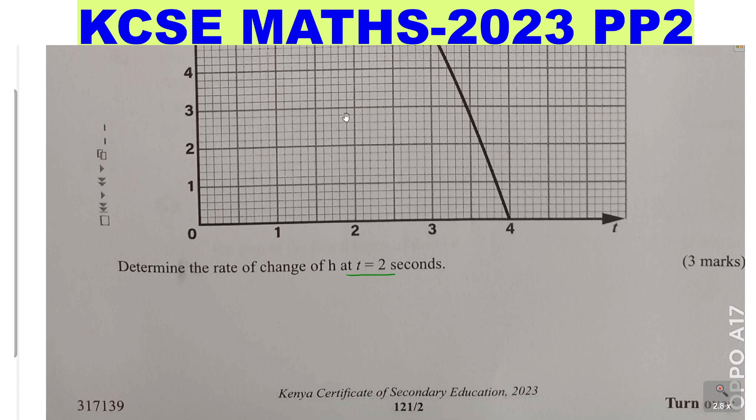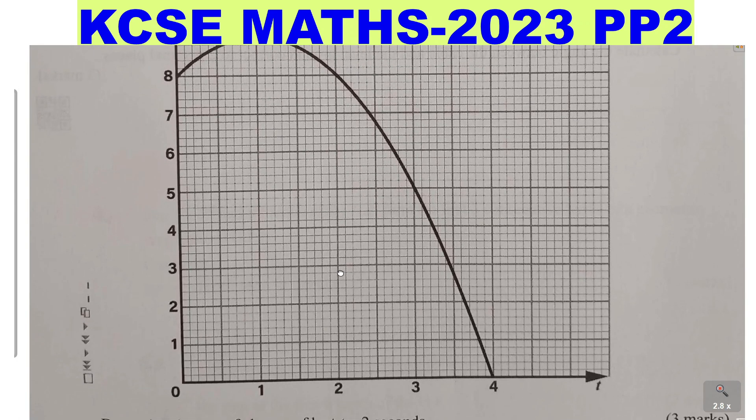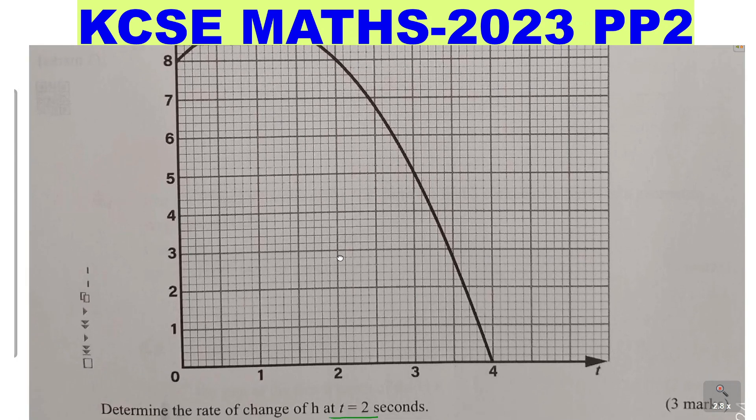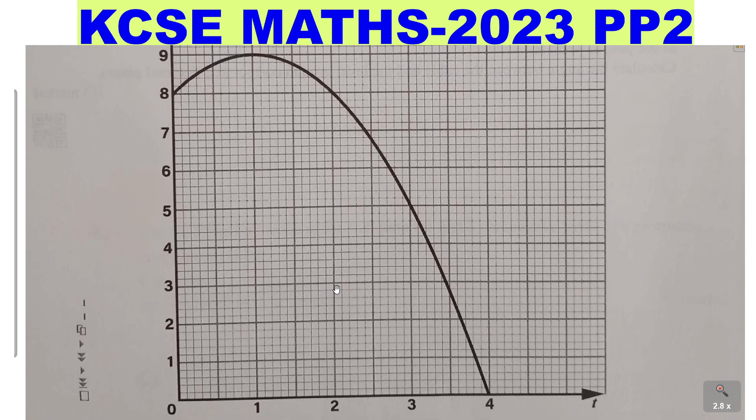I just go to the graph. At t equals 2, we need to draw the tangent to the curve at t equals 2. This is why you're supposed to draw the tangent. So t equals 2 is here. Just move upwards. So you're supposed to draw the tangent that is touching this point here.